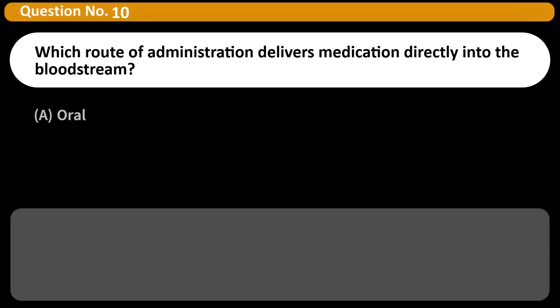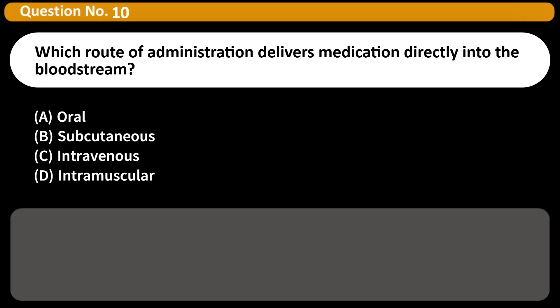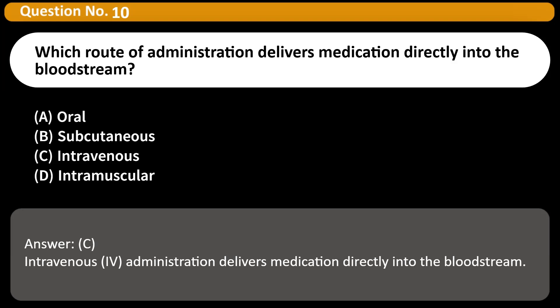Which route of administration delivers medication directly into the bloodstream? A. Oral. B. Subcutaneous. C. Intravenous. D. Intramuscular. Answer: C. Intravenous administration delivers medication directly into the bloodstream.